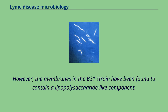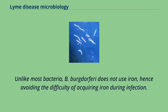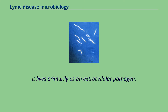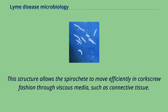However, the membranes in the B31 strain have been found to contain a lipopolysaccharide-like component. B. burgdorferi is a microaerophilic organism, requiring little oxygen to survive. Unlike most bacteria, B. burgdorferi does not use iron, hence avoiding the difficulty of acquiring iron during infection. It lives primarily as an extracellular pathogen. Like other spirochetes, such as Treponema pallidum, B. burgdorferi has an axial filament composed of flagella that run lengthways between its cell wall and outer membrane.